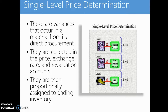Single level price determination. These are variances that occur in a material from its direct procurement. They are collected in the price, exchange rate, and revaluation accounts, and they are proportionally assigned to end-in or return. Think of single level price determination as a variance that occurs in a material and does not need to be transferred anywhere else.